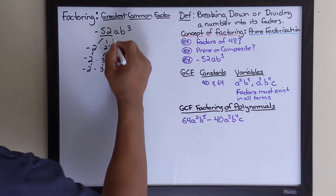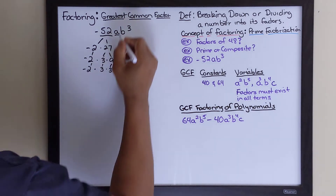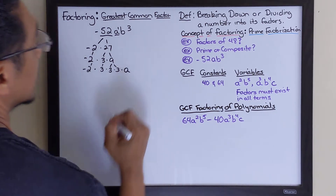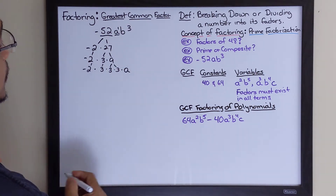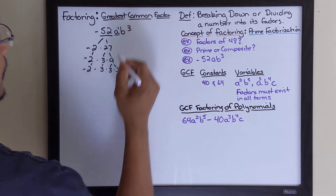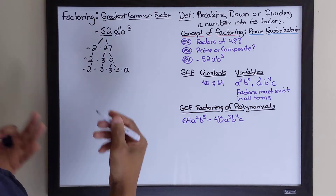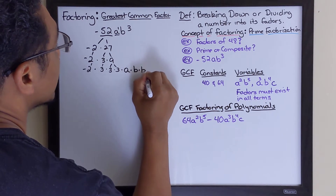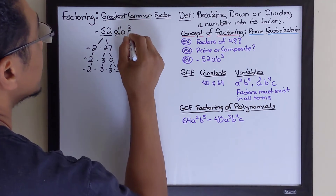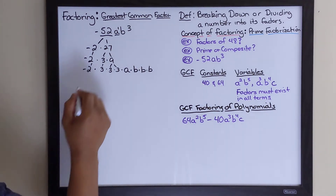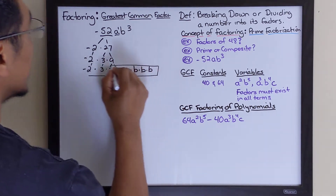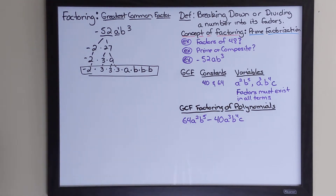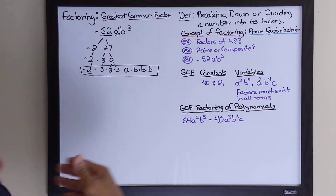For the variable a, since it's to the first power, there's only one a. For b³, that's b times b times b — three b's. So the fully factored form of negative 52ab³ is: negative 2 times 2 times 13 times a times b times b times b.